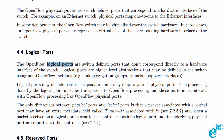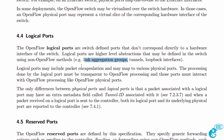Logical ports are logical interfaces such as tunnels, loopbacks, and link aggregated ports. As an example, you would have two physical ports — GigabitEthernet 0 and GigabitEthernet 1 — in a link aggregation. The physical ports would be the physical gigabit interfaces, and the logical port would be the link aggregation port.